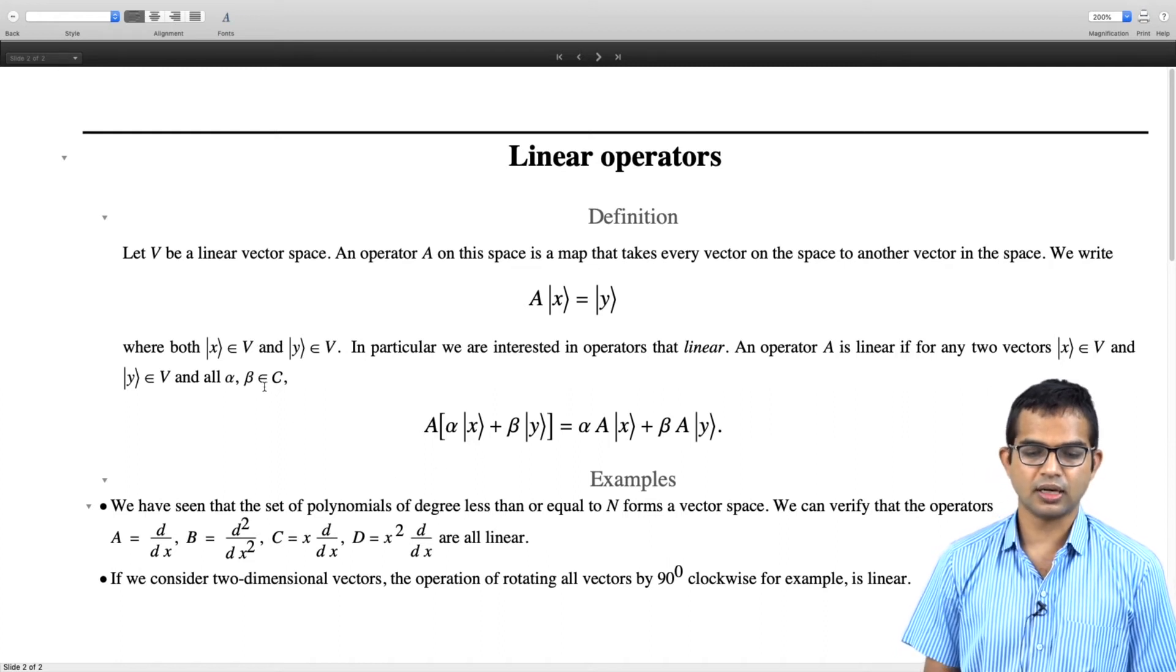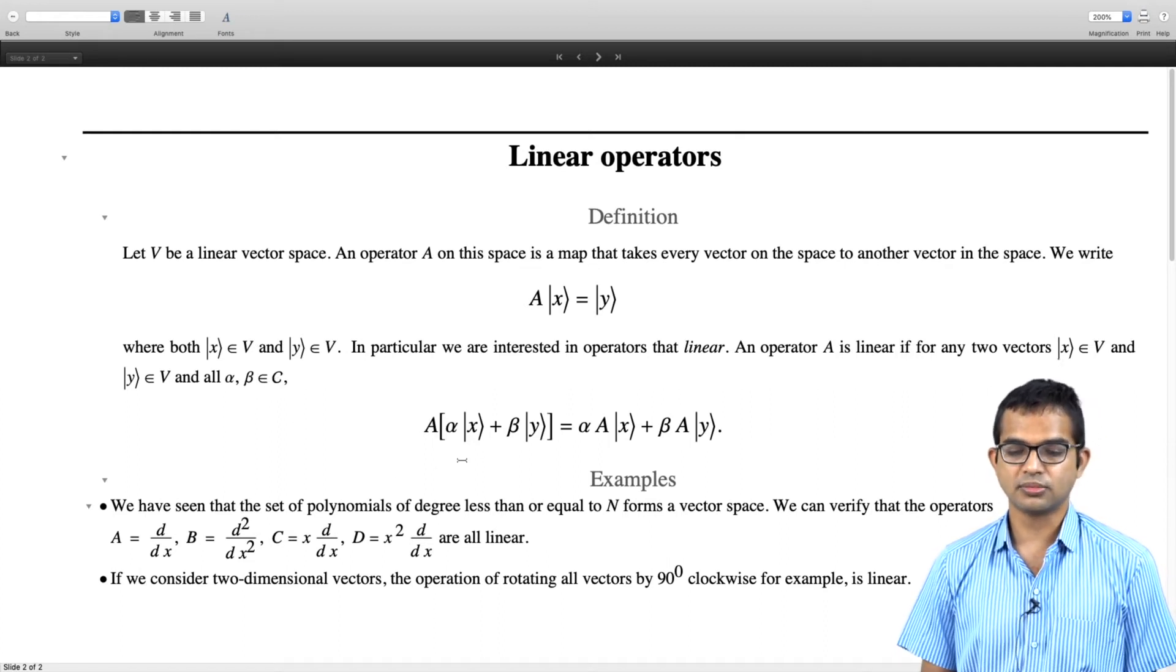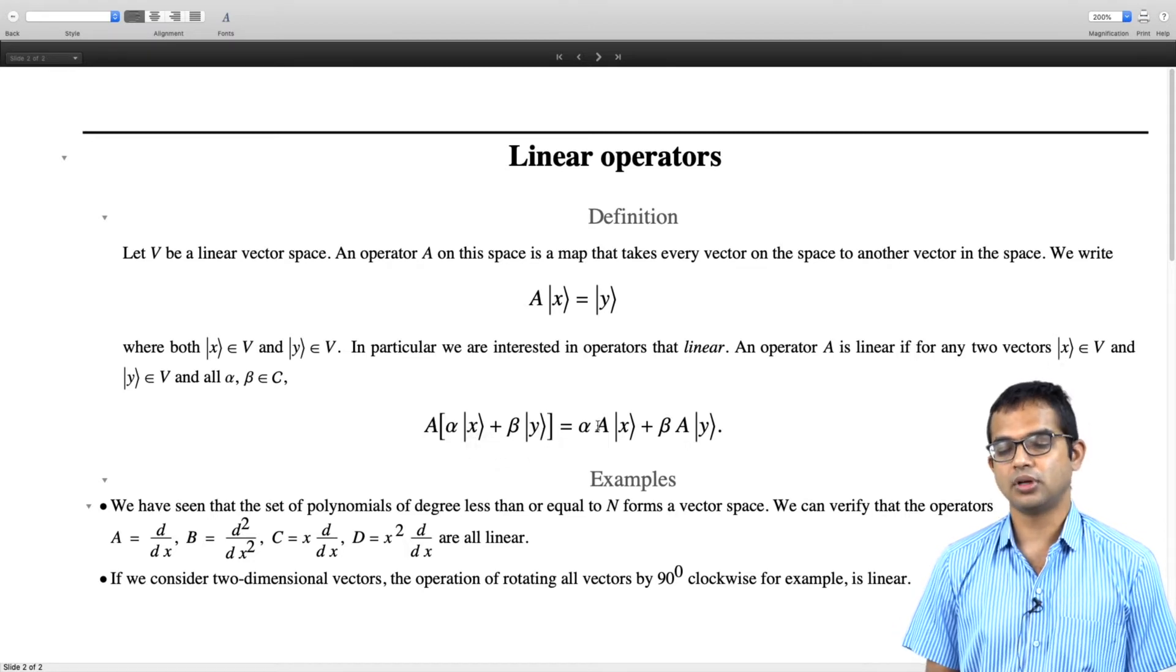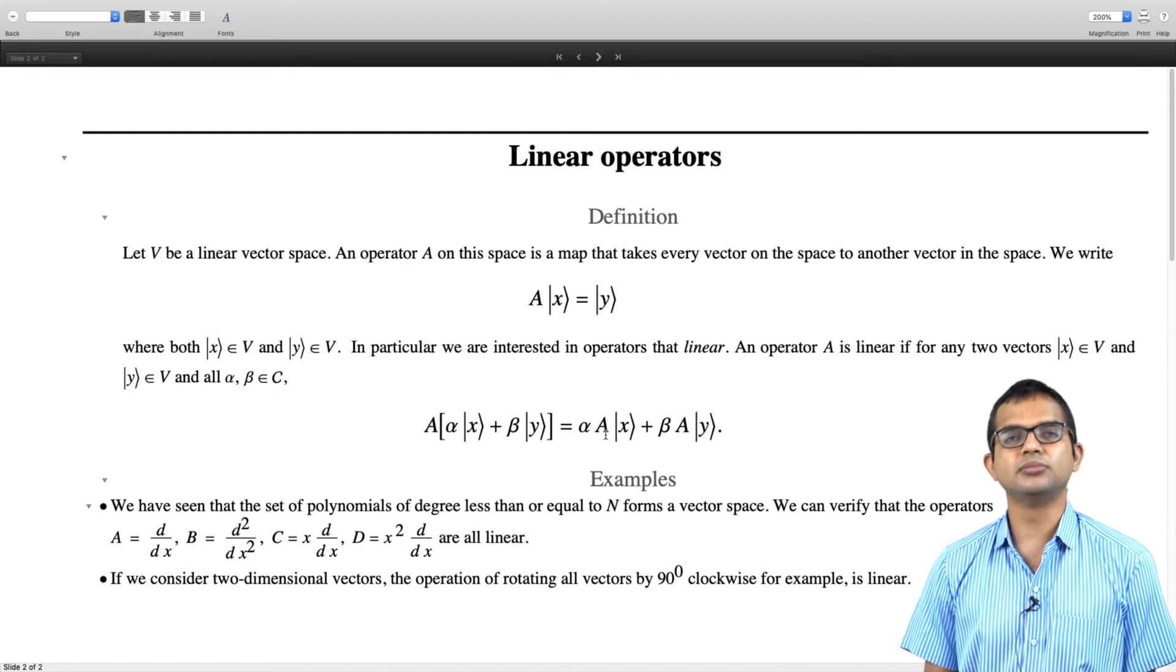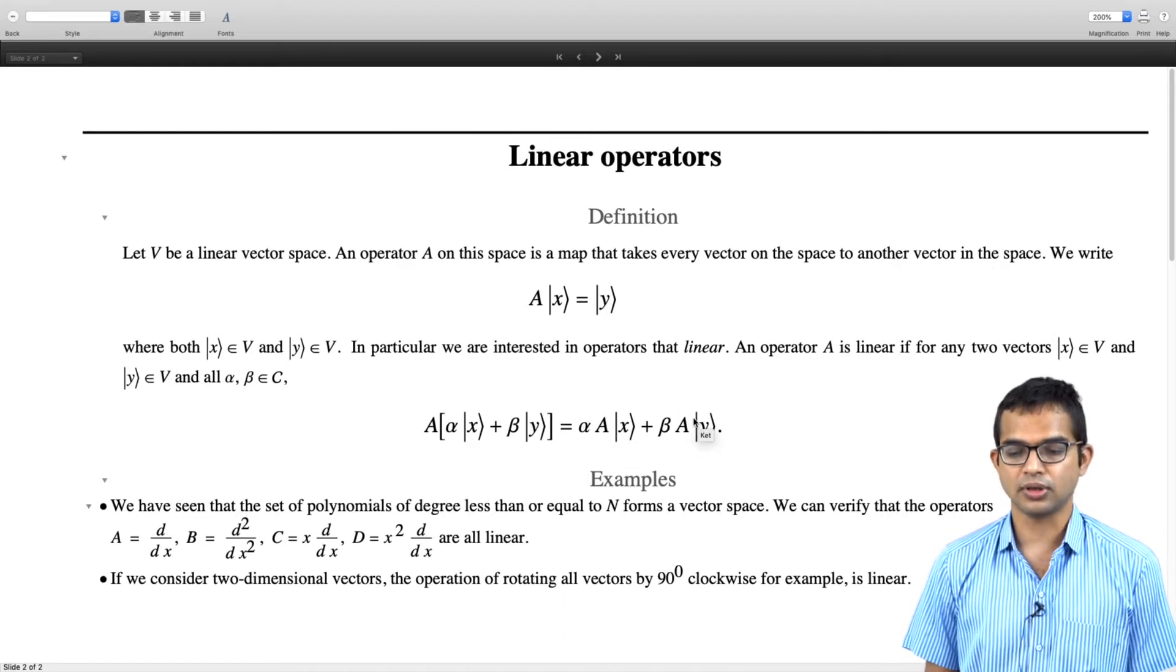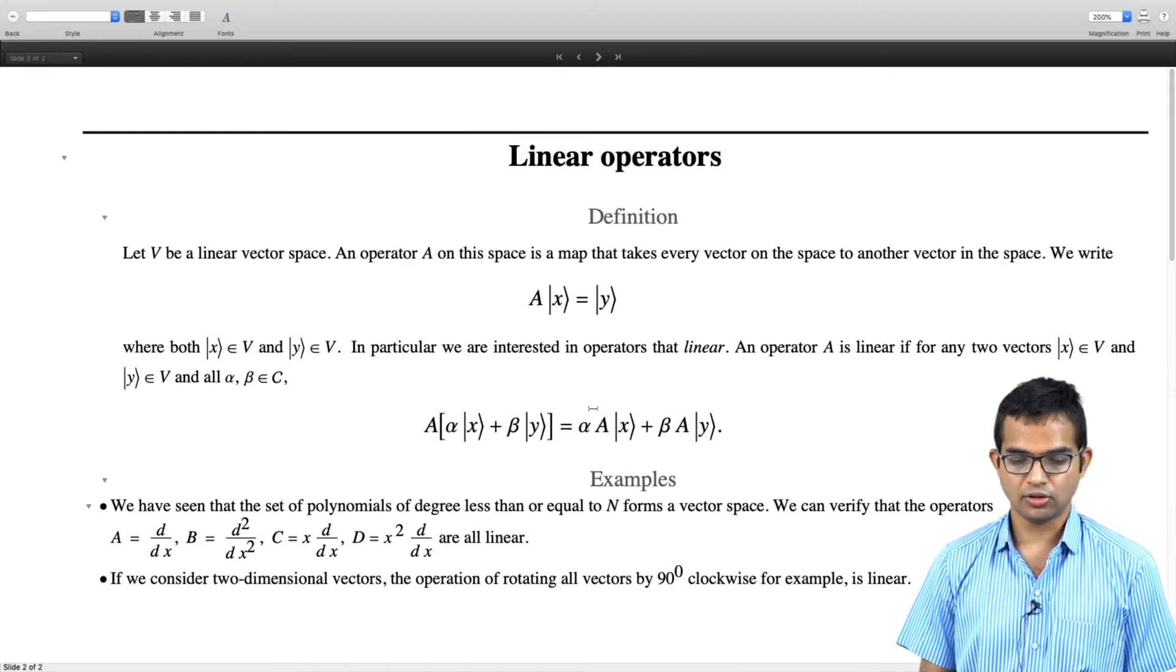The key property is if alpha, beta are some arbitrary complex numbers, A acting on alpha x plus beta y must give you alpha times A acting on x plus beta times A acting on y. That is what makes it a linear operator.